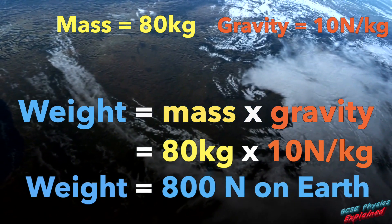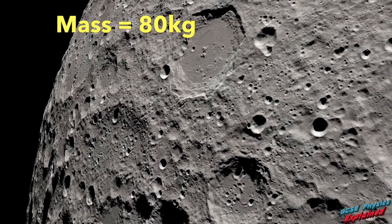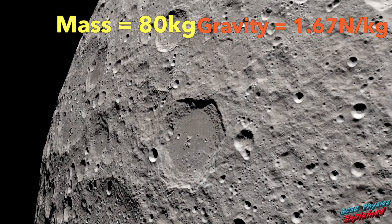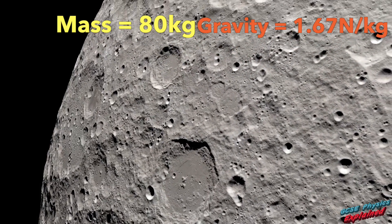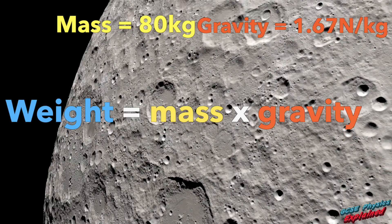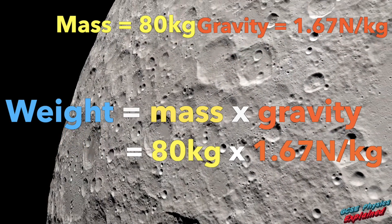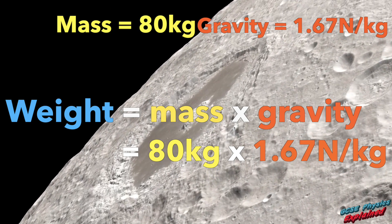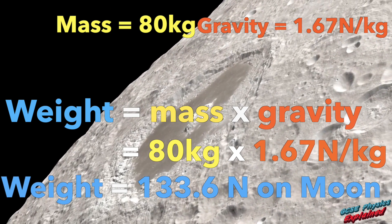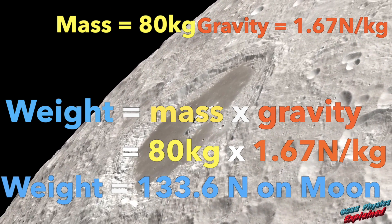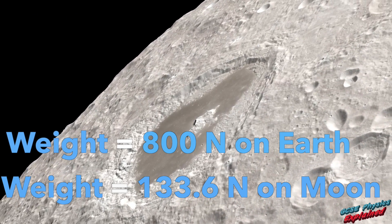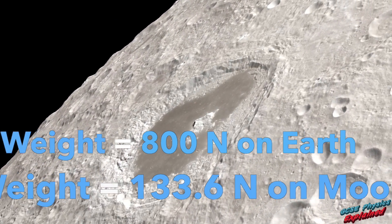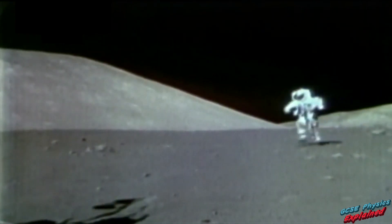And suppose the 80 kilogram person now stands on the moon. The moon's gravity is only 1.67 newtons per kilogram, because it's smaller than the Earth. Let's calculate their weight on the moon. Weight equals mass times gravity, so that's 80 kilograms times 1.67 newtons per kilogram, which equals 133.6 newtons of downward weight. So you can see the person's weight is less on the moon than it is on the Earth, because the moon's gravity is less. That's why you can jump higher and further on the moon than you can on the Earth.